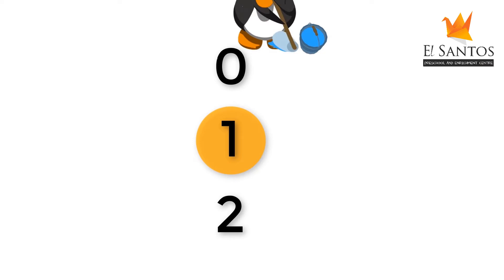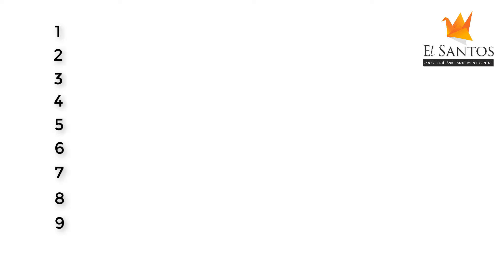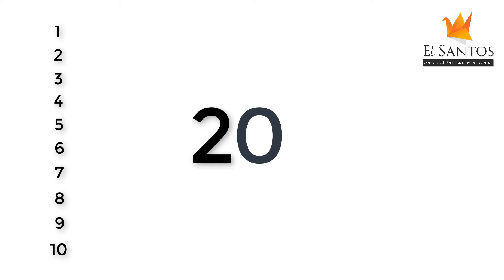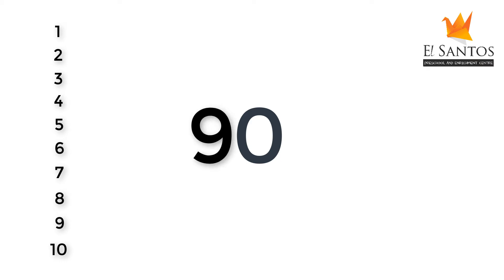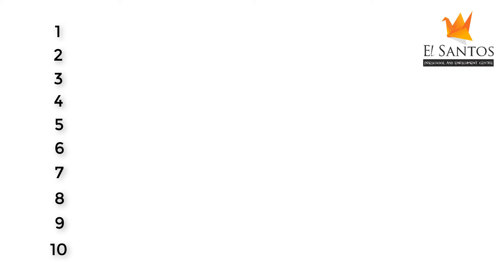Ok children, so we know how to write numbers from 1 to 10. Let's first write them down. We also learned about 0, and when 0 is with another number, it gives power to that number. We call them power numbers: 10, 20, 30, 40...